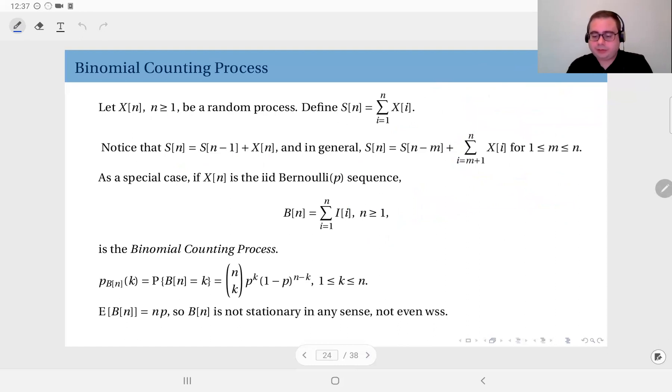Now, as a special case, in this definition, assume this Xi is the IID Bernoulli-P sequence. In this case, the sum process becomes the binomial counting process. How so? If you look at it at time N, what does it mean? You have N IID Bernoulli-P random variables. And the value of B of N at that point is the sum of them. Well, this we know from our earlier discussions that has a binomial distribution. So B of N will have a binomial distribution with parameter N and P. So the PMF of B of N will be equal to N choose K times P to the power K, 1 minus P to the power N minus K, obviously for K between 1 and N. This is called the binomial counting process. You're counting the number of successes in a sequence of IID Bernoulli-P trials.